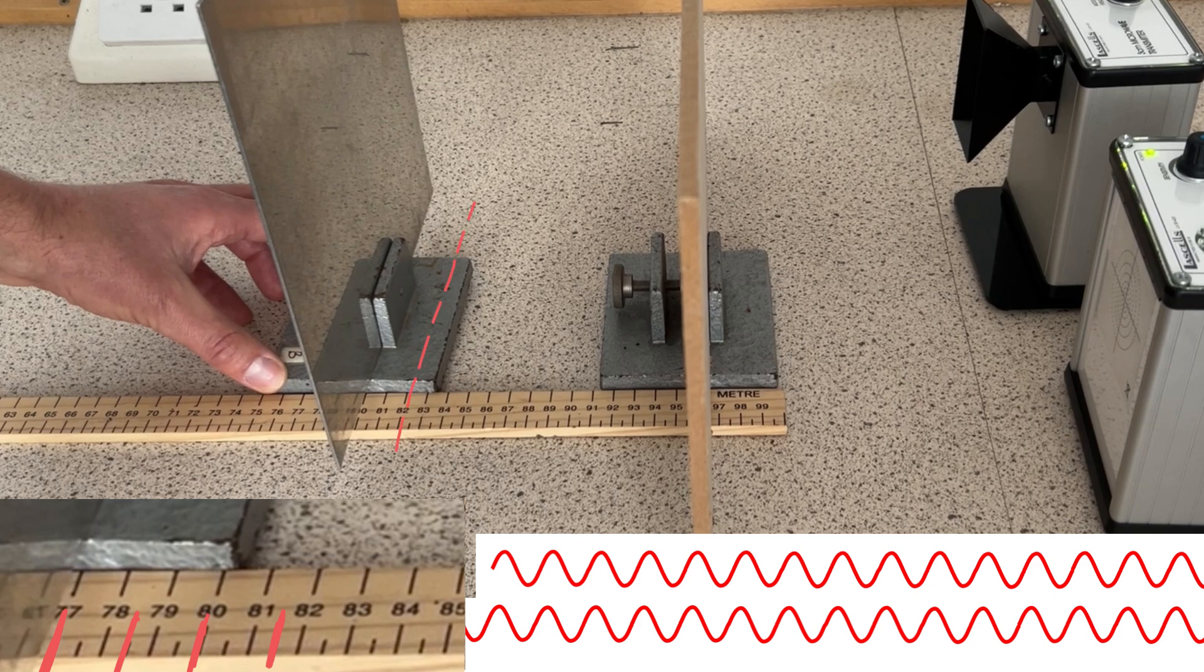But because the wave reflected off the metal sheet goes there and back, that means we will only have to move the metal sheet half a wavelength for the extra path length that the wave going there and back travels to be one wavelength.